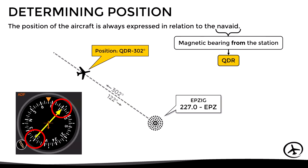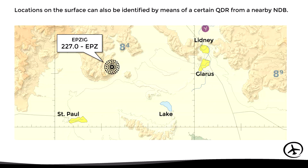An NDB not only allows us to know our current position, but can also be used to identify checkpoints on the ground. Here we have the EPSIG NDB, which is located close to several checkpoints that can be used for VFR navigation, such as towns or lakes. Using a chart, a plotter, and taking into account the magnetic variation, we can determine the approximate QDR that passes over each of these checkpoints.